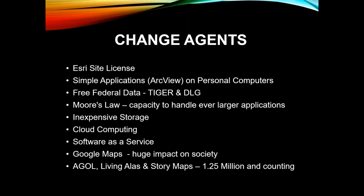In Everett Rogers' model, how do you move from innovation to saturation and convert all the laggards? You need change agents. I list these: the Esri site license, simple applications — ArcView was certainly a game changer — free federal data and enlightened policy like TIGER and the USGS digital line graphs. We've seen the capacity grow to support processing LiDAR and large datasets, inexpensive storage, cloud computing, software as a service — you don't even have to install the software on a computer anymore. Google Maps had a huge impact on society, and from Esri's viewpoint: ArcGIS Online, the Living Atlas with its 4,000 authoritative layers, and story maps. According to Alan Carroll last week, they reached 1.25 million story maps published and viewable by the general public.